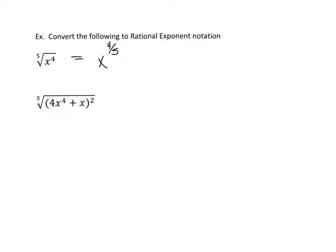The next example is the cube root of 4x to the 4th plus x all to the 2nd power. If we want to write that in rational exponent notation, we can write 4x to the 4th plus x, and all of that is raised to the 2 3rd power, where 2 is our exponent and the 3 represents our cube root. This is the way we would write our answer when asked to write in rational exponent notation.